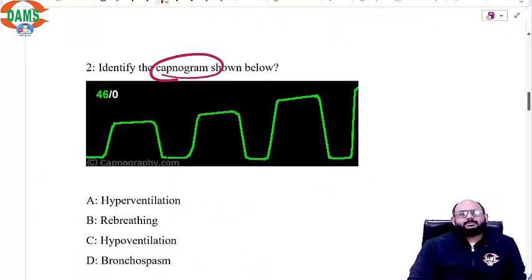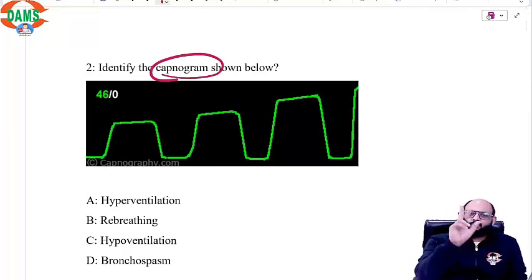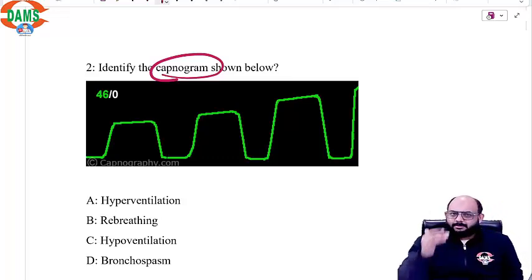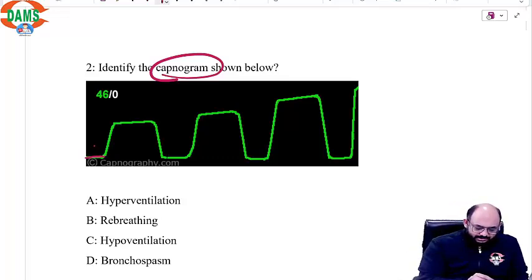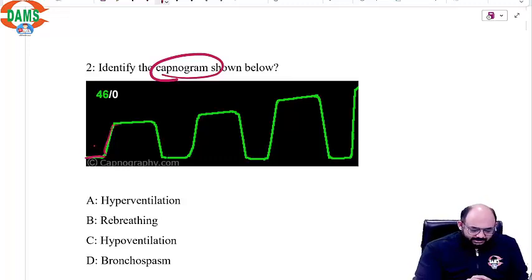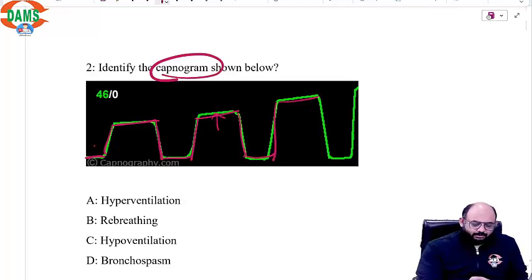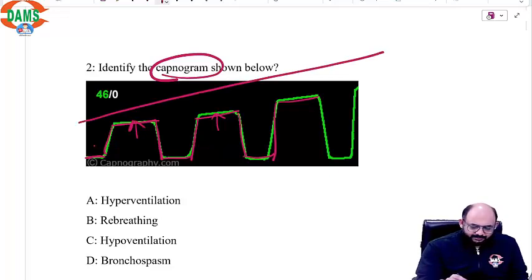Next question: identify the capnogram shown below. Whenever you have a capnogram, the rule is to think two things — always start with expiration and think like a transducer. You are the transducer at the end of the endotracheal tube. The patient starts to expire: you see a respiratory baseline, then an expiratory upstroke, then an alveolar plateau, then inspiration. But what is happening is the expiratory upstroke and plateau are increasing in amplitude — the graph is moving up.